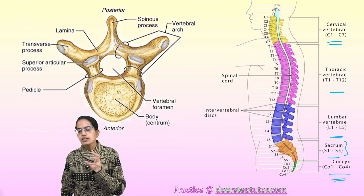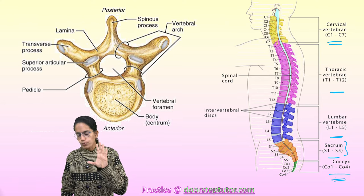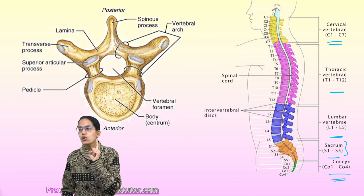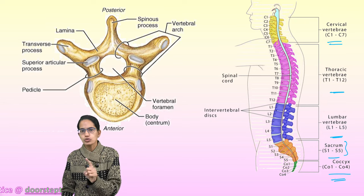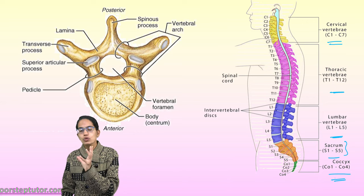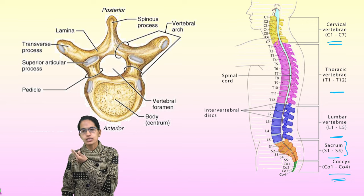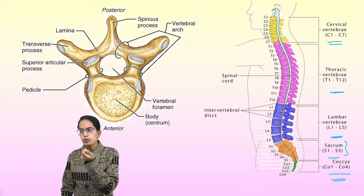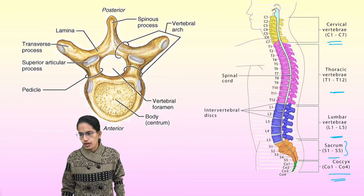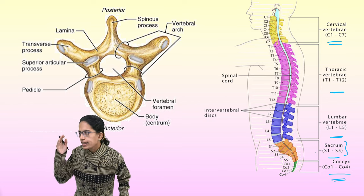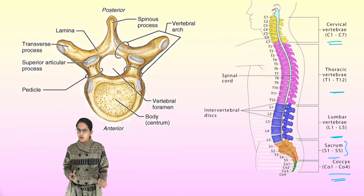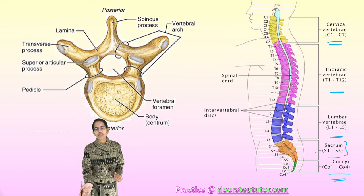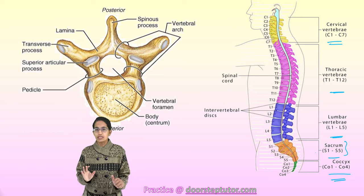The coccyx consists of four bones fused to form one bone called the coccyx, also known as the tailbone. Inflammation of that bone is known as coccydynia. The vertebral column provides shape and curvature to the body.